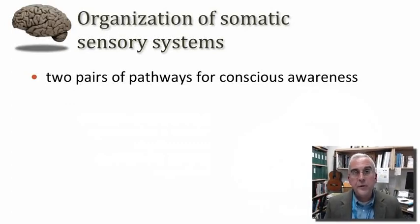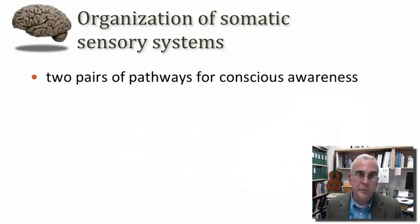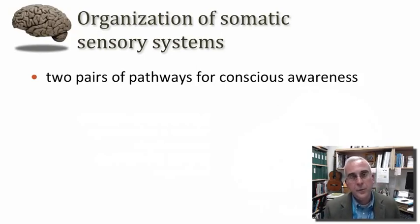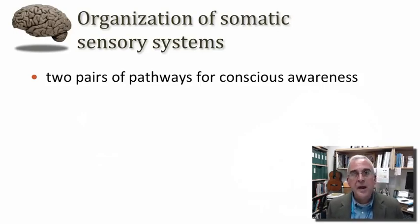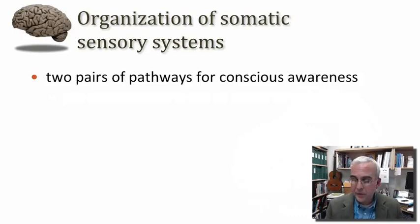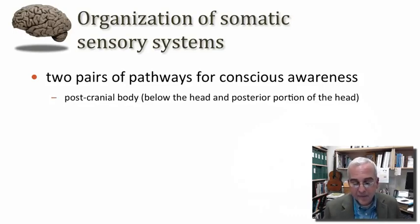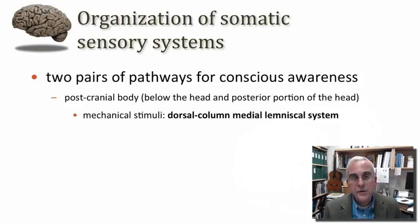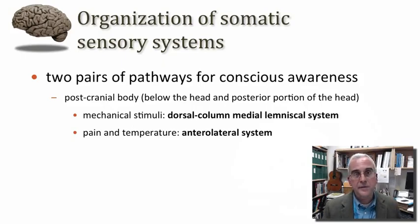Let's review the overall organization of somatic sensory pathways. For conscious awareness of somatic sensation, we have two pairs of pathways — one pair serving the postcranial body, and another serving the anterior cranium including the face. For the postcranial body, we have a pathway concerned with mechanosensation: the dorsal column medial lemniscal system, discussed in a previous tutorial. The system conveying pain and temperature signals for the postcranial body is called the anterolateral system.